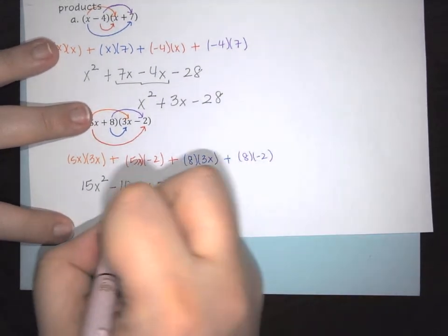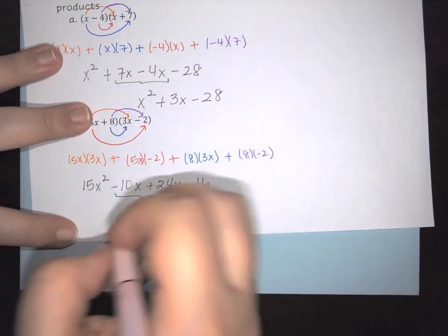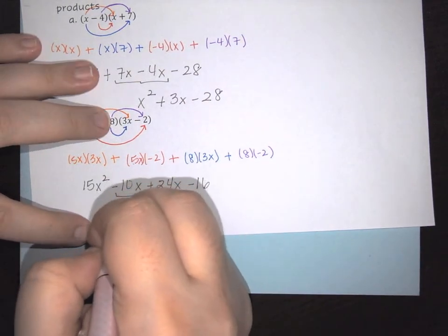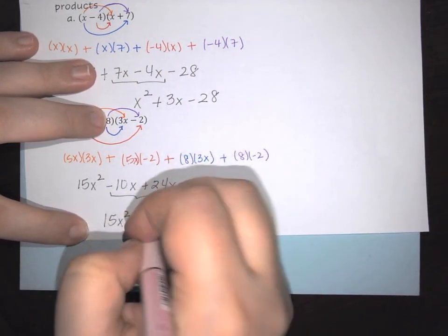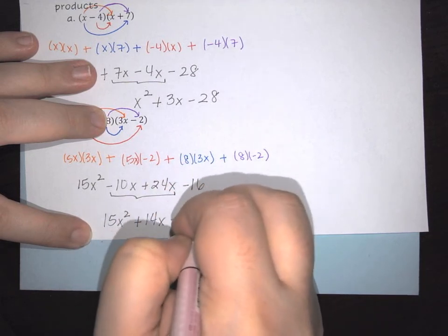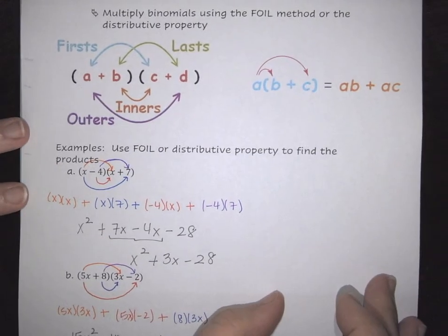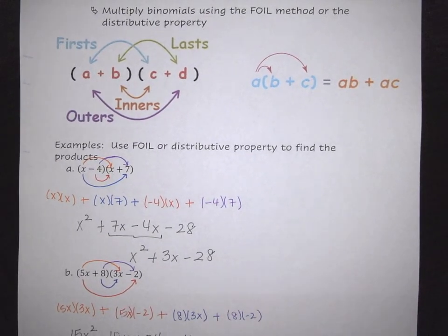And then again, just like before, we've got to combine the middle terms here. So this becomes 15X squared plus 14X minus 16. And that, in a nutshell, is everything that you need to know in order to foil or multiply some binomials together.